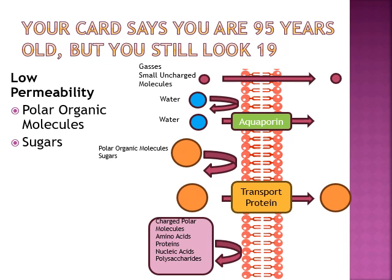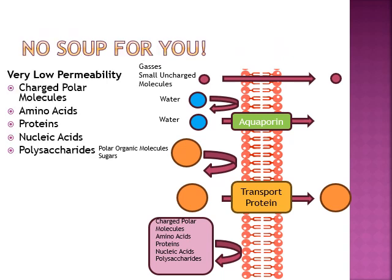Not all molecules are the same size. Amino acids, proteins, nucleic acids, polysaccharides — most of our macromolecules — are too big. They won't fit and can't make it through the membrane at all. So gases, small uncharged molecules, and water can easily cross that barrier. Just about everything else needs help, and we're going to talk about what helps them through.